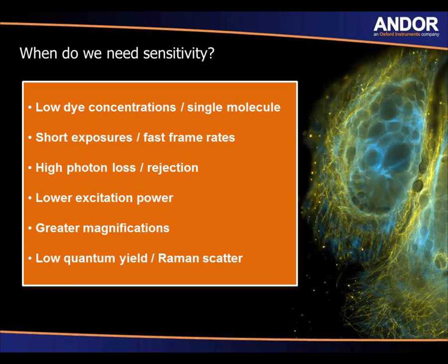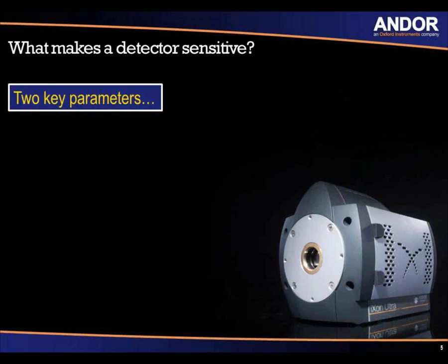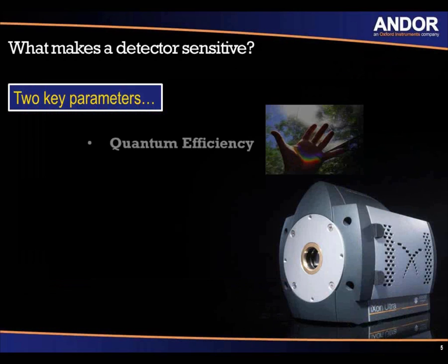Sensitivity is very important, but what parameters in the camera are required to make it sensitive? There are two key parameters. The first is quantum efficiency — a measure of how efficient your camera or sensor is at converting the photons emitted from your sample into photoelectrons. The higher the quantum efficiency, the better. For example, EMCCD cameras are all back-illuminated and have a very high quantum efficiency, generally above 90%.